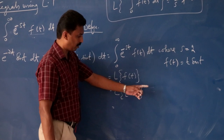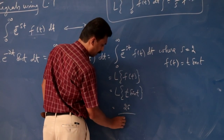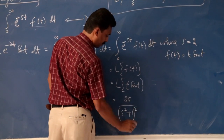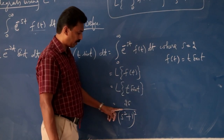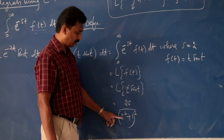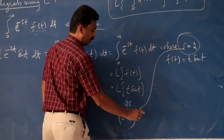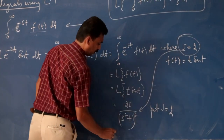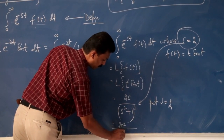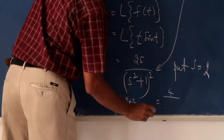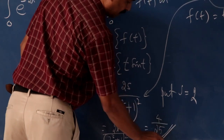From the previous problem, the Laplace transform of t·sin t is 2s/(s² + 1)². Substituting s = 2, we get 2×2 divided by (2² + 1)², which is 4 divided by (4 + 1)², that is 4 divided by 5² = 4/25. This is the final answer.